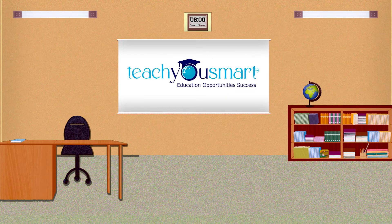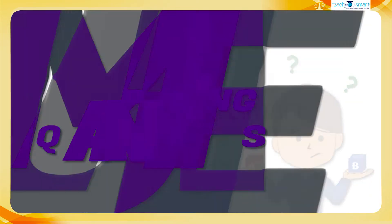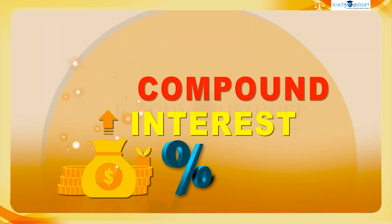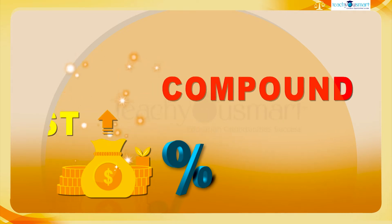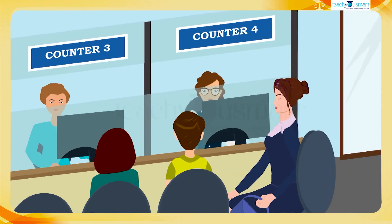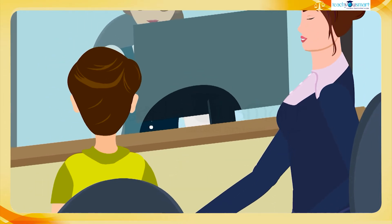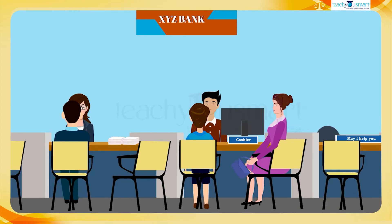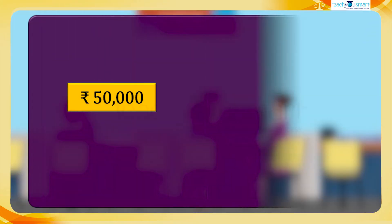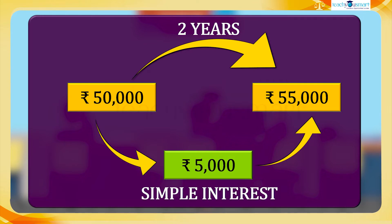Hello students, let's continue our journey through comparing quantities. Today we are going to a new topic: compound interest. In the previous session we saw that Rohat and his mother went to a bank and deposited 50,000 rupees at a rate of interest of five percent per annum for two years. After two years they got back 55,000 rupees. That additional amount is called simple interest, and we know how to calculate it.